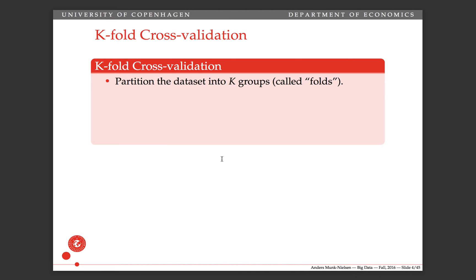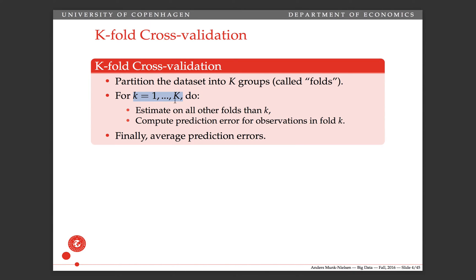It proceeds the following way. First you partition your data set into k groups called folds. And then for each of these folds, you estimate first on all of the data that does not include the k-th fold. And then you compute the prediction error for observations in fold k. So then what you're doing is you're fitting, you're gauging your fit on observations that you didn't use to fit the model. And then in the end, you average over these 10, you average over k and over the observations in that. So there's an average. You'll have a prediction error for each observation for n observations.